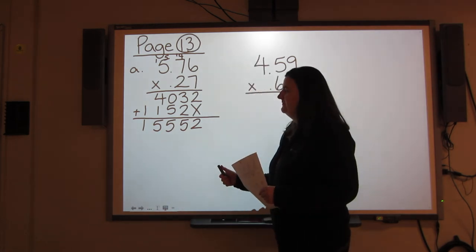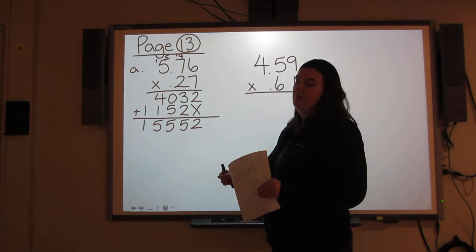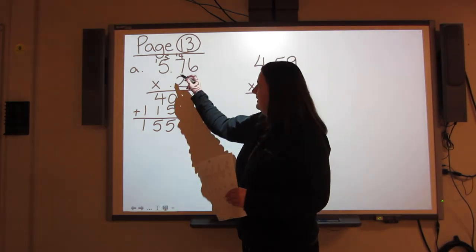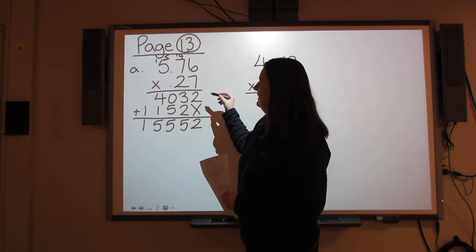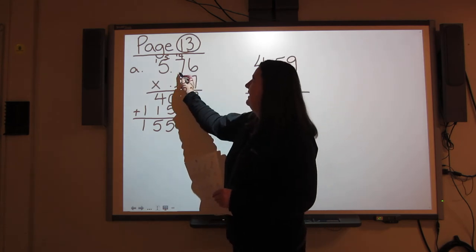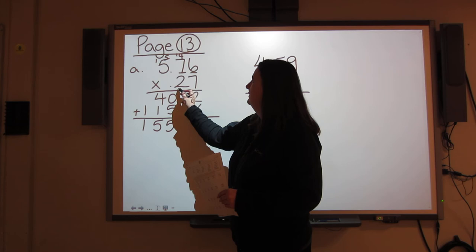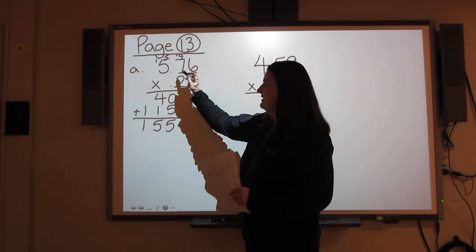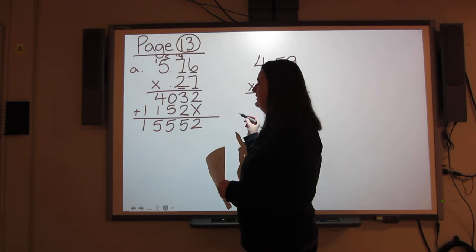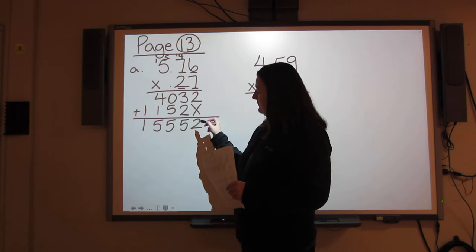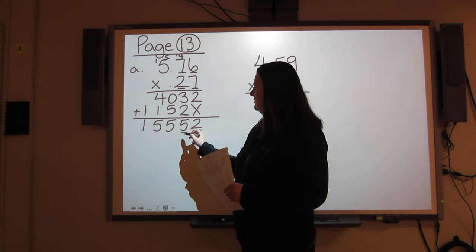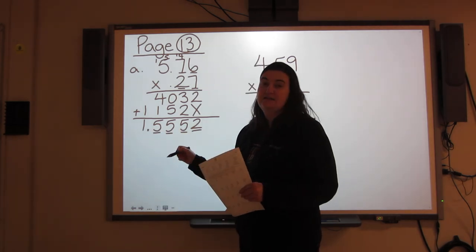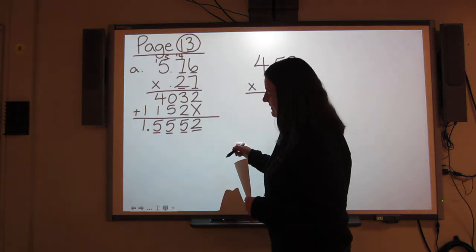Now that I have my final answer, this is when I put the decimal in. I count how many decimal spots I have in the question. In this case, I have 1, 2, 3, 4. There are 4 digits after the decimal in my question, so I'm going to have 1, 2, 3, 4 in my answer. And that is how you do that.